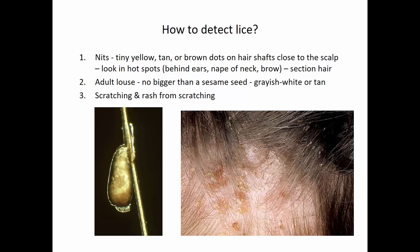Hot spots to look for nits include behind the ears, the nape of the neck, and the brow — check those spots first. You must check in very thin sections of hair; you can't grab a big clump. Use a couple of sticks to separate very thin layers and check for nits. You'll find all sorts of things in kids' hair — sand, sparkles, dandruff. If you can move it by brushing, it is not a nit. To remove a nit from the hair shaft, you have to use your fingernails.